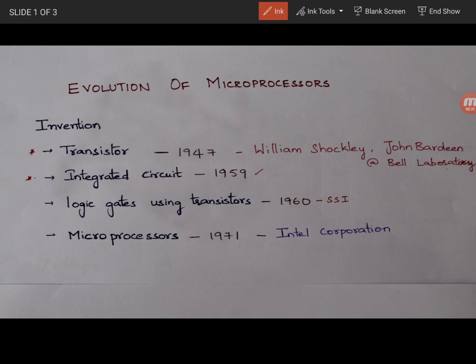After that the era of silicon technology started with the invention of integrated circuit. So integrated circuit was the integration of many transistors, diodes, resistors on a single chip in the year 1959. And then came the logic gates using transistors in 1960 small scale integration, SSI, small scale integration.